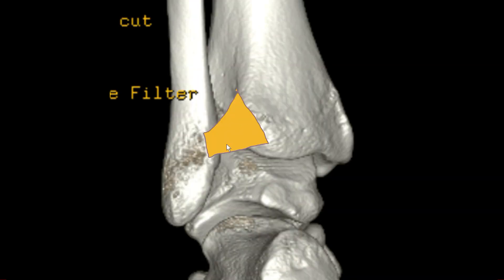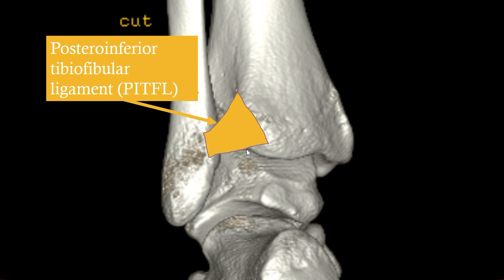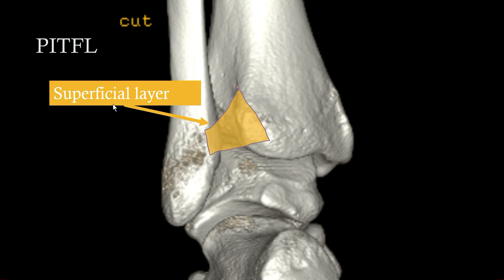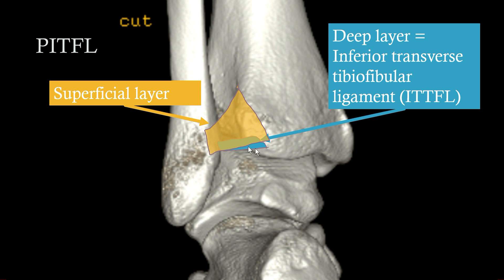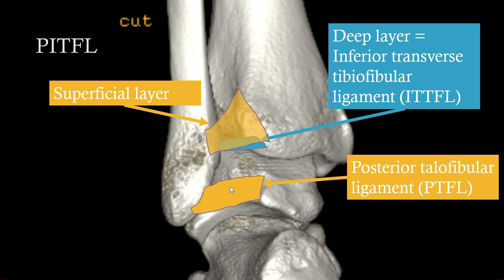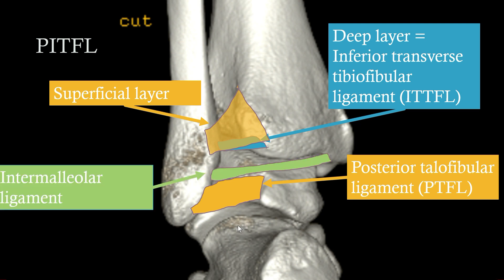In the posterior view, the triangularly shaped posterior inferior tibiofibular ligament has two components: a superficial one and a deep layer, with the deep layer running more parallel to the plafond and inserting a little more anteriorly. In between the syndesmotic ligaments there can be, to a variable degree, an intermalleolar ligament — sometimes long, connecting the two malleoli, sometimes shorter. It's interesting because this ligament sometimes runs through the posterior recess of the ankle joint, so if you see a ligament there, think of the intermalleolar ligament and don't confuse it with a loose body.